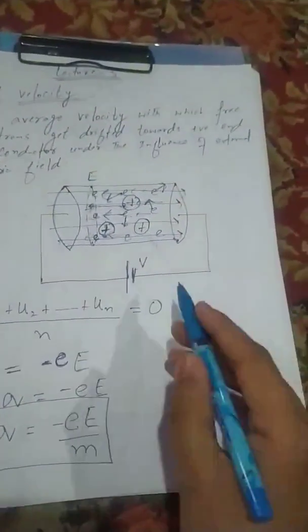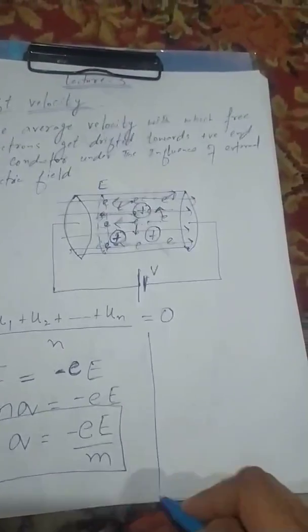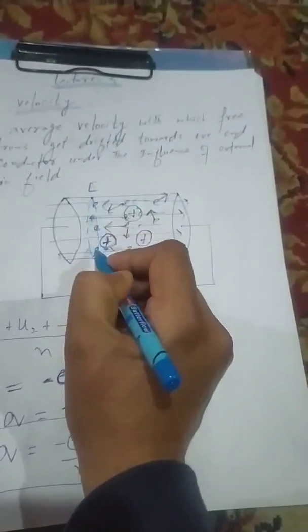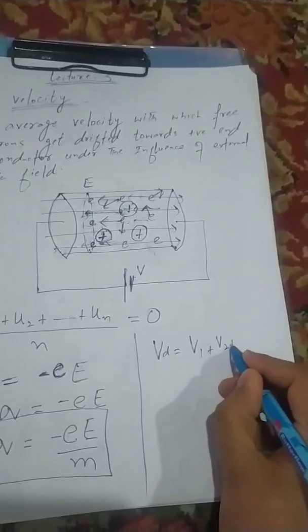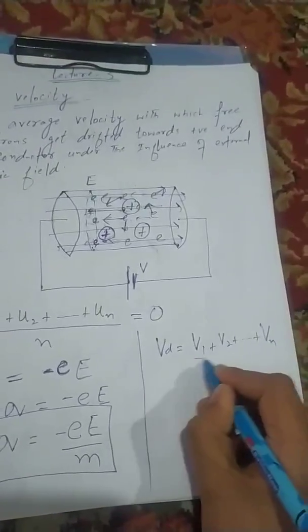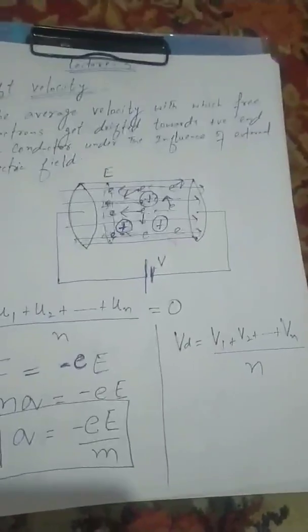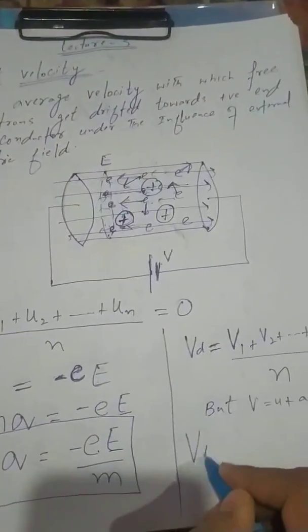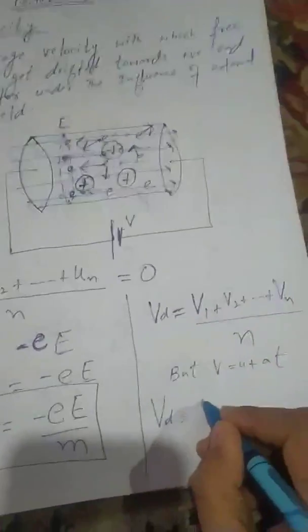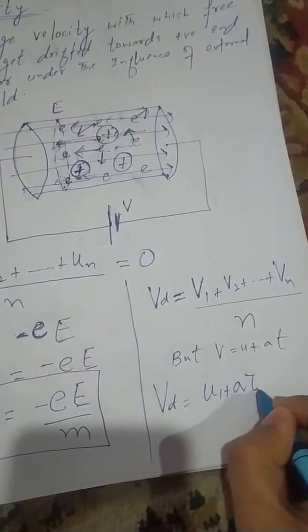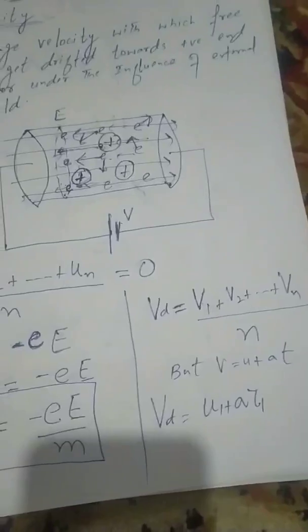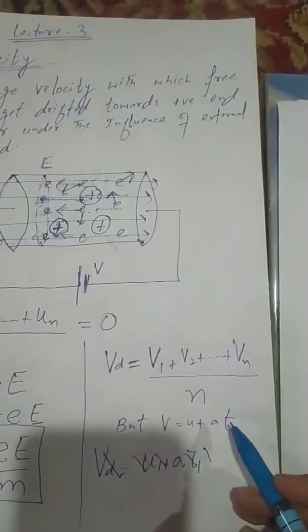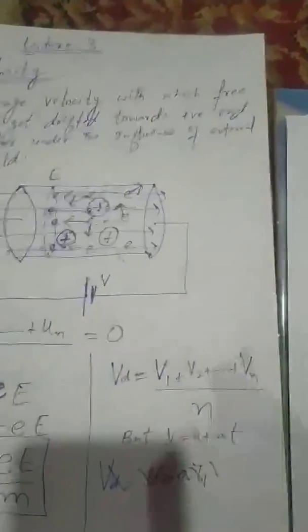As per definition, drift velocity is equal to the average value of the velocities: v_d = (v1 + v2 + ... + vn) / n. We know that v = u + at, so for each electron: v1 = u1 + a·τ1, and so on.